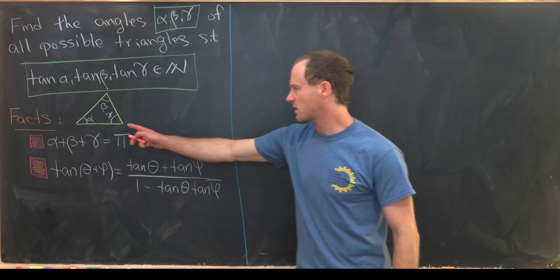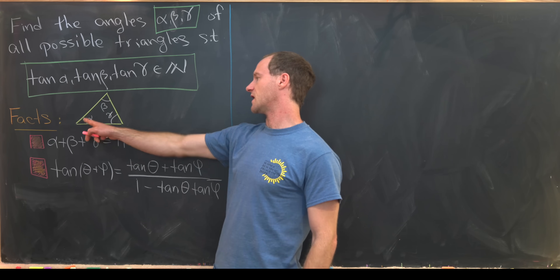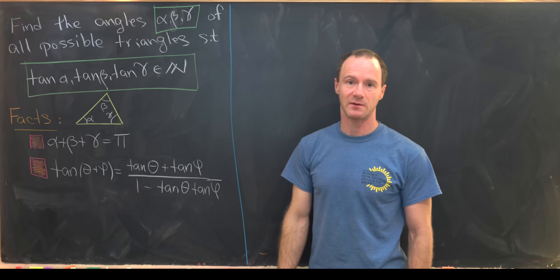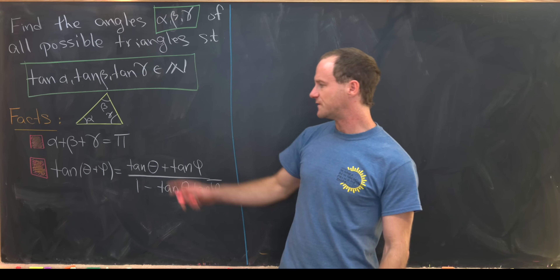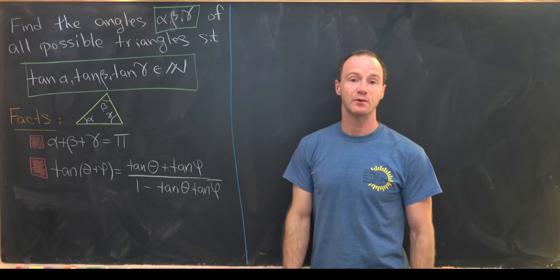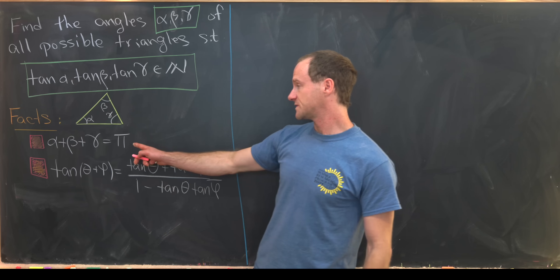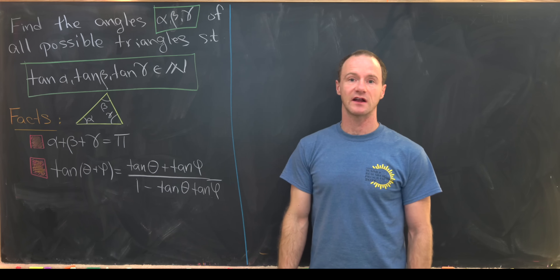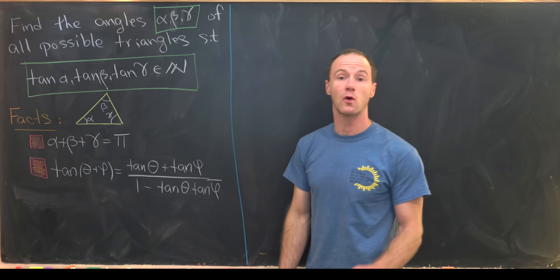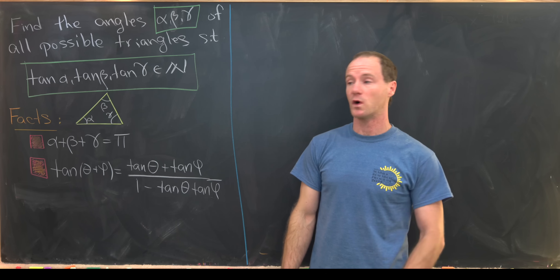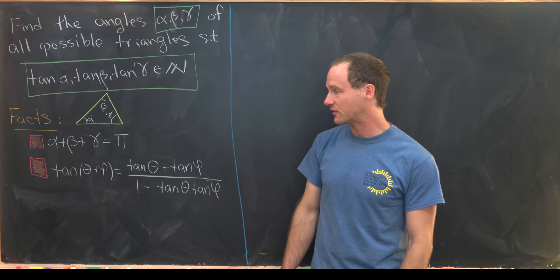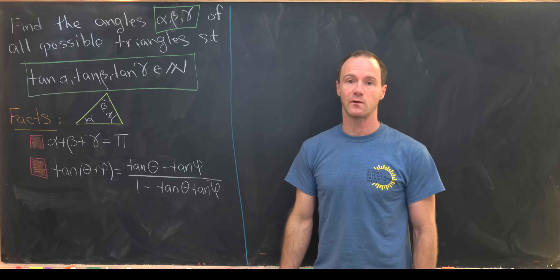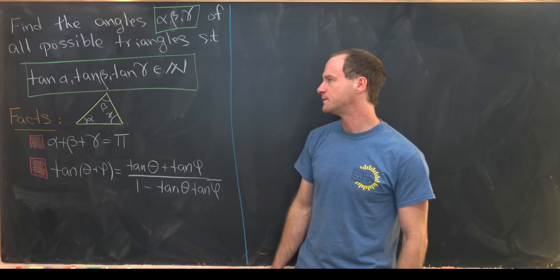I've laid out my triangle with angles alpha, beta, and gamma. We're going to use the following two facts, which we will prove. First, that the sum of the interior angles of a triangle is π, or 180 degrees. And next, the sum formula for the tangent function.